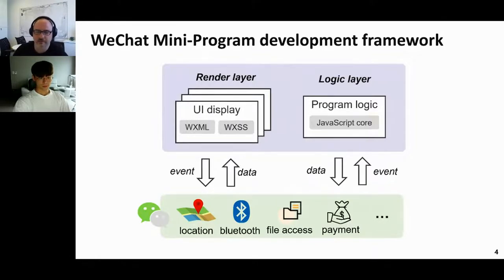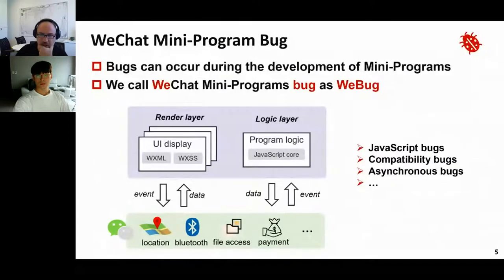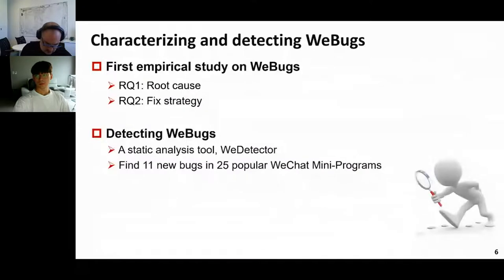WeChat also provides many native functions for mini-program development such as location, Bluetooth, file access, and payment. However, bugs can occur during mini-program development, including JavaScript bugs, compatibility bugs, and asynchronous bugs — we call these V-bugs. To understand V-bugs, we conducted an empirical study to characterize them and investigate their root causes and fix strategies.